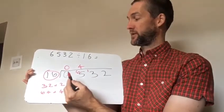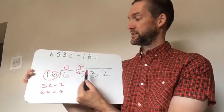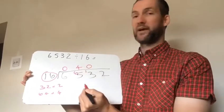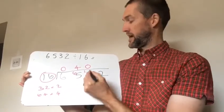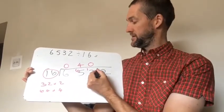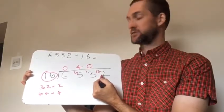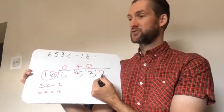Now we need to think to ourselves, well how many times does 16 go into 13? Well it doesn't. So we have a 0 here. And this 13 we need to carry over in front of the 2. So now we've got 132.